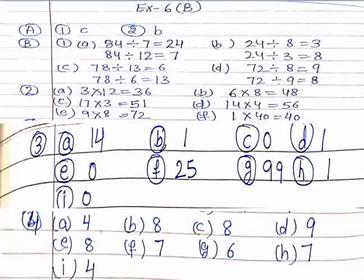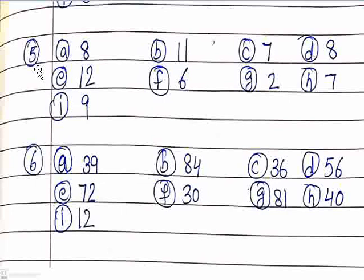Similarly, you have to solve the other parts of this question. Now here you can see the answers — firstly, do all the questions yourself and then check your answers. Part A and Part B of the first and second questions are covered, the second question has parts A to F, the third question has parts A to I, and the fourth has parts A to I. The fifth question has parts A to I and the sixth has parts A to I. Now students, your exercise is over. Your homework is to write it in your notebook. Thank you, students.